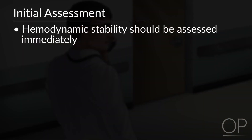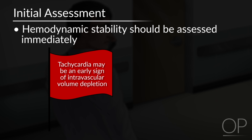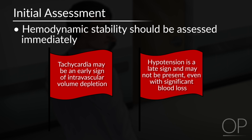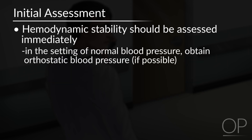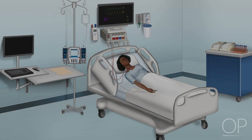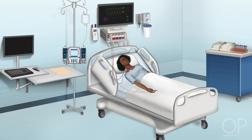Hemodynamic stability should be assessed immediately. Tachycardia may be an early sign of intravascular volume depletion. Remember, hypotension is a late sign and may not be present even with significant blood loss. In the setting of normal blood pressure, if possible, obtain orthostatic blood pressure. Once you arrive in your patient's room, what should you focus upon during your initial targeted physical exam?